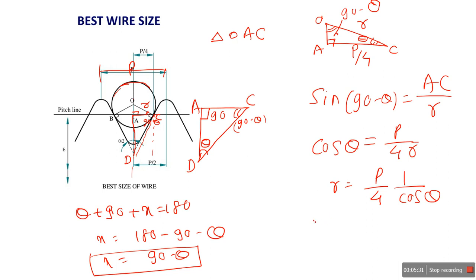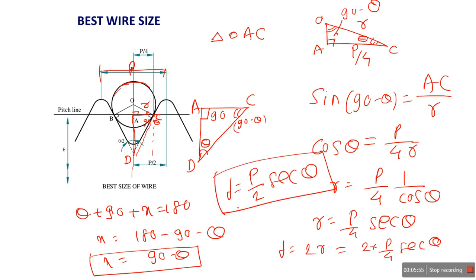We have to find out this value of R is P by 4 upon cos theta. So R is P by 4. We can isolate as sec theta, because 1 by cos is nothing but sec theta. So D is twice of R. So the answer is 2 into P by 4 sec theta. So final D we can get is P by 2 sec theta. So here we know the value of P, and theta is nothing but the flank angle.